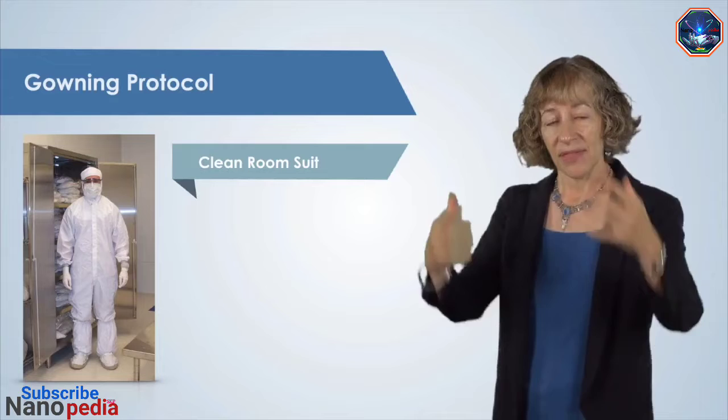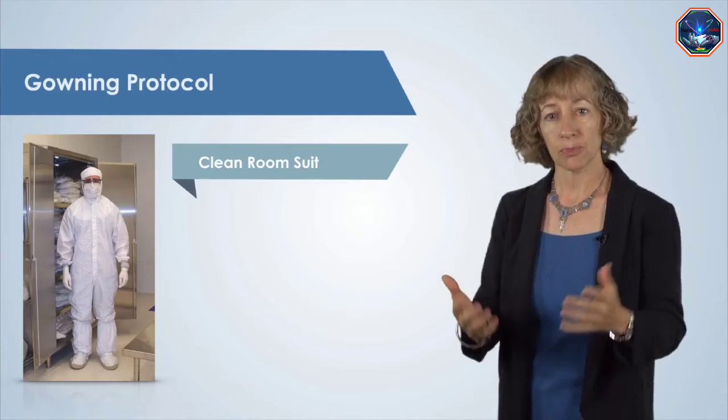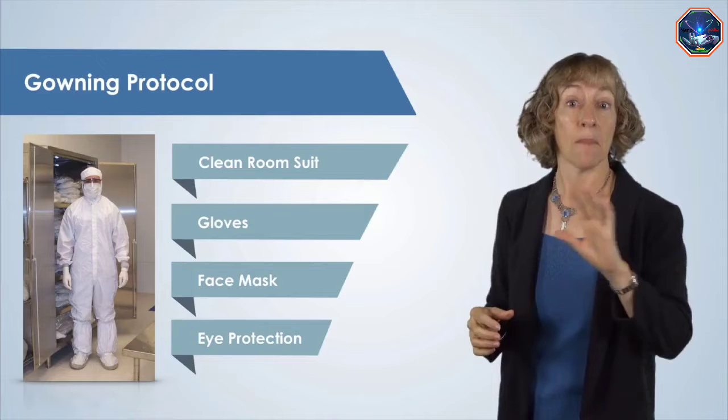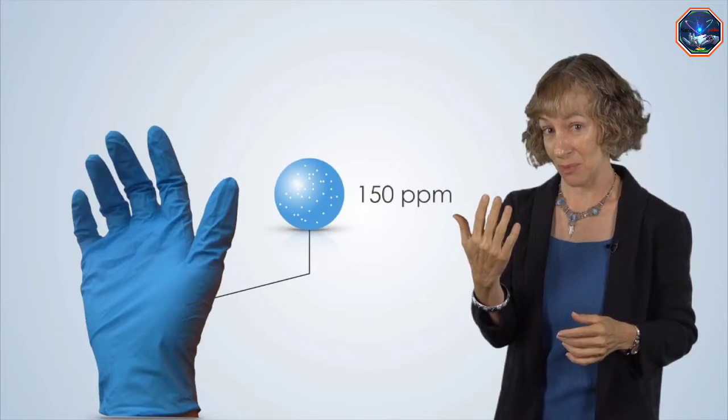Clean room suits cover a person's entire body except for their face and hands. To complete the gowning process, clean room users put on gloves, a face mask, and eye protection. The gloves make a big difference — a moving bare hand produces 200,000 particles per minute, while a gloved hand produces only 150 particles per minute.